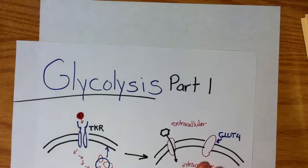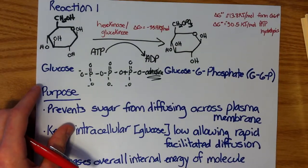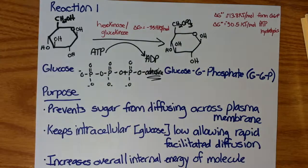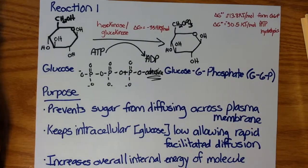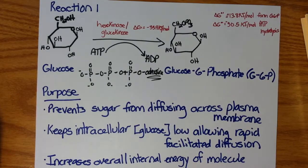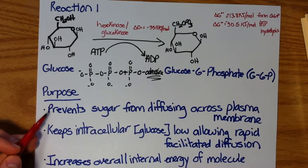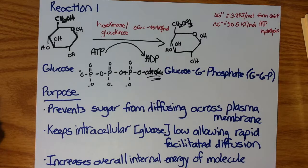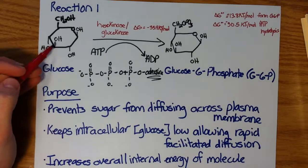Now we have glucose in the cell, in the cytoplasm more specifically. Let's go through these reactions. The first reaction involves the phosphorylation of glucose. And this serves multiple purposes. First, by phosphorylating it, you add a strong negative charge to the molecule.